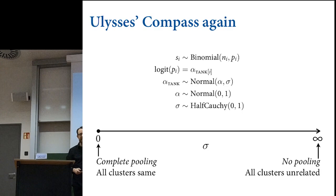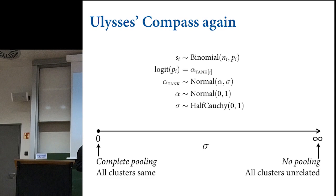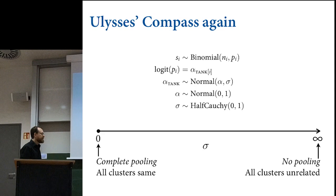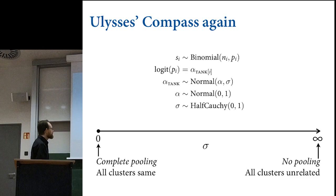If sigma is a very small number, there will be a lot of pooling and a lot of shrinkage—the model is extremely skeptical of any tank that's an outlier. It'll think that must be sampling variation and shrink it strongly back towards the grand mean. If sigma is a very large number, then the model thinks it's not very skeptical of anything it might encounter about a tank, because there's so much variation among tanks that anything could go.